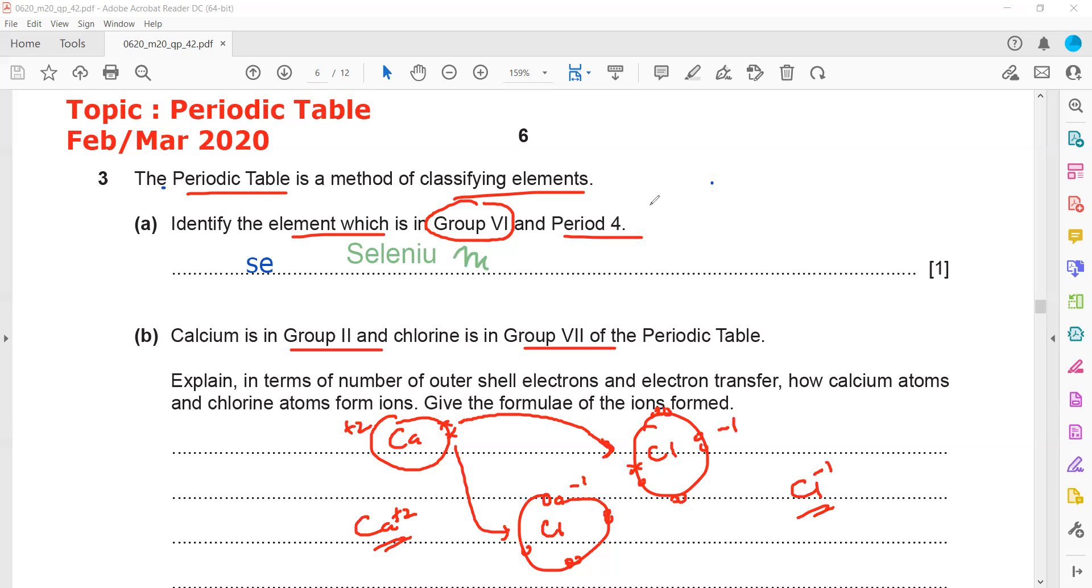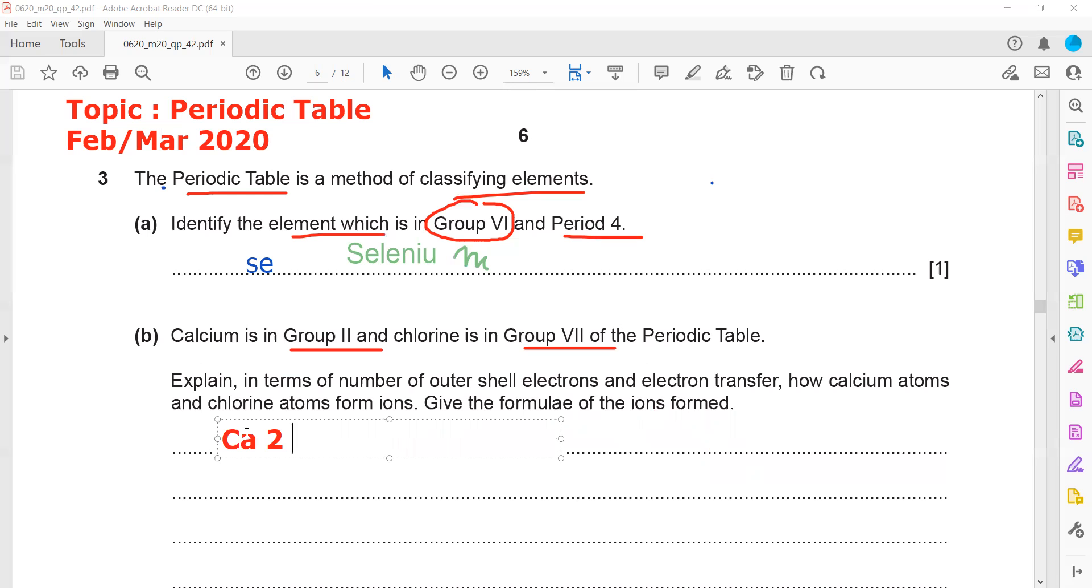The answer for this one because it's not the explanation like drawing, you have to explain in words. What you will mention the first thing that calcium belongs to group 2. It is having 2 electrons and chlorine 7 electrons are there in outer shell.